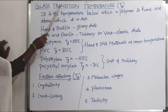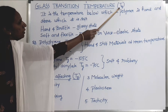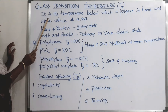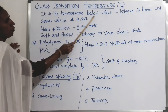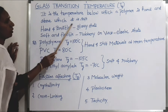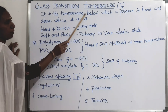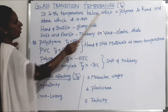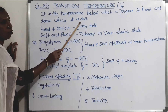Glass transition temperature is denoted by the symbol Tg. It is a temperature below which a polymer is hard and above which it is soft. Below the temperature a polymer is in hard condition, and above the temperature the polymer is in soft condition.